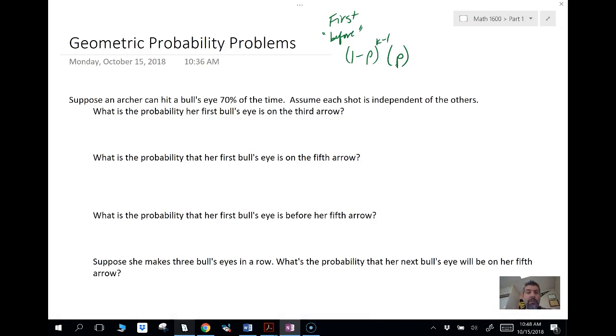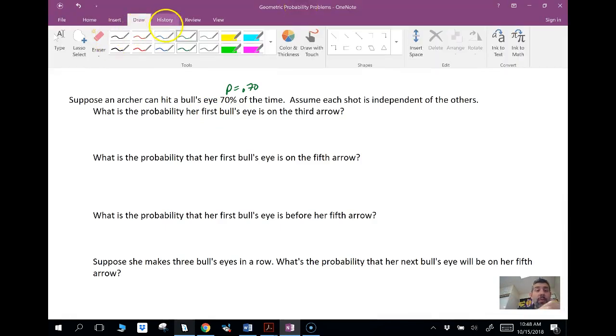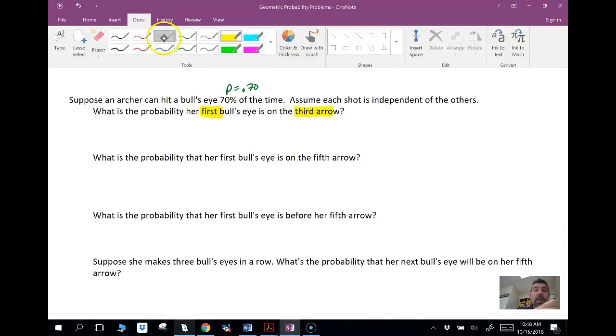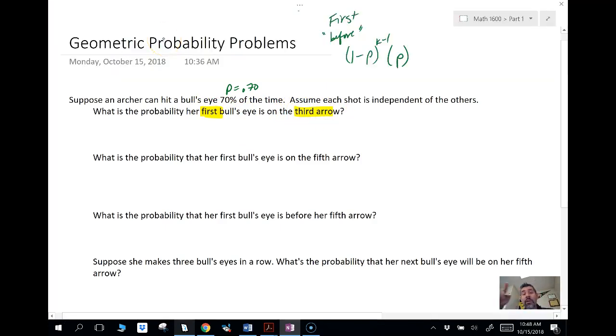So suppose an archer can hit a bullseye 70% of the time, so this is p. P is 70%. Assume that each shot is independent. We need independence in order for this to be geometric. What is the probability that her first bullseye comes on the third arrow? So we're looking for a success on the third shot.